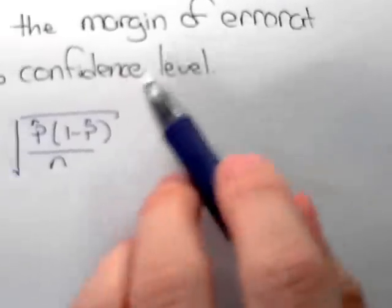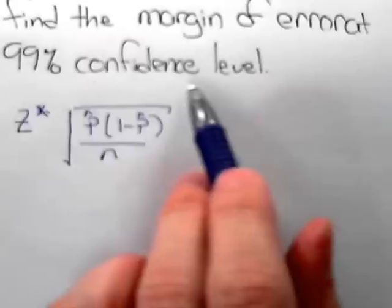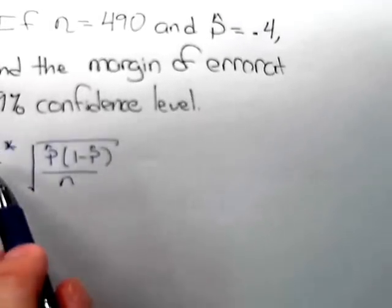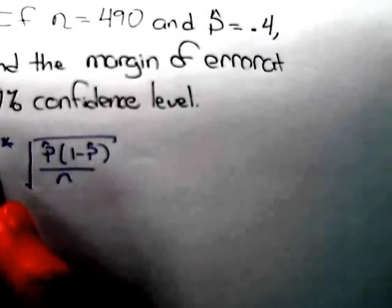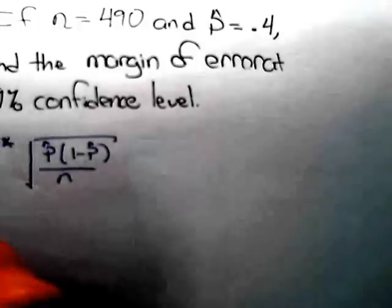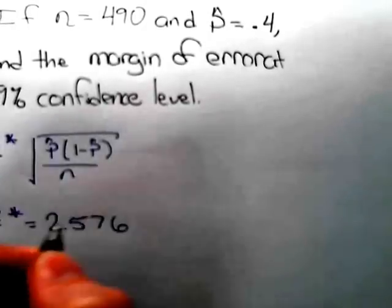We already have our p hat, which is 0.4, we have our sample size, which is 490. We need to use the 99% confidence interval to find z star. This will be done using the calculator or table, the t table, and we get z star is equal to 2.576.